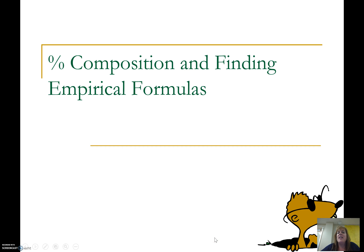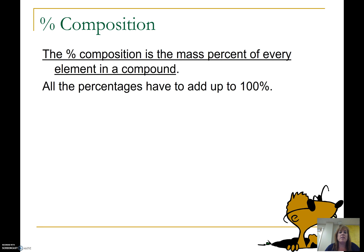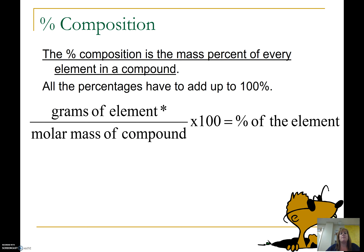Hey, Chem Kids, Campbell here. In this video, we're going to talk about how to calculate percent composition and calculate empirical formulas. Percent composition is the mass percent of every element in a compound. And if it's the percent of every element in a compound, then those percentages have to add up to 100%.